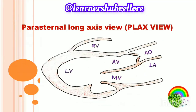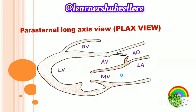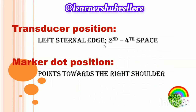Coming to the parasternal long axis view. The structures visible include the right ventricle, left ventricle, aorta, aortic valves, left atrium, and the mitral valve. The transducer position is at the left sternal edge, second to fourth intercostal space. The marker dot points towards the right shoulder.